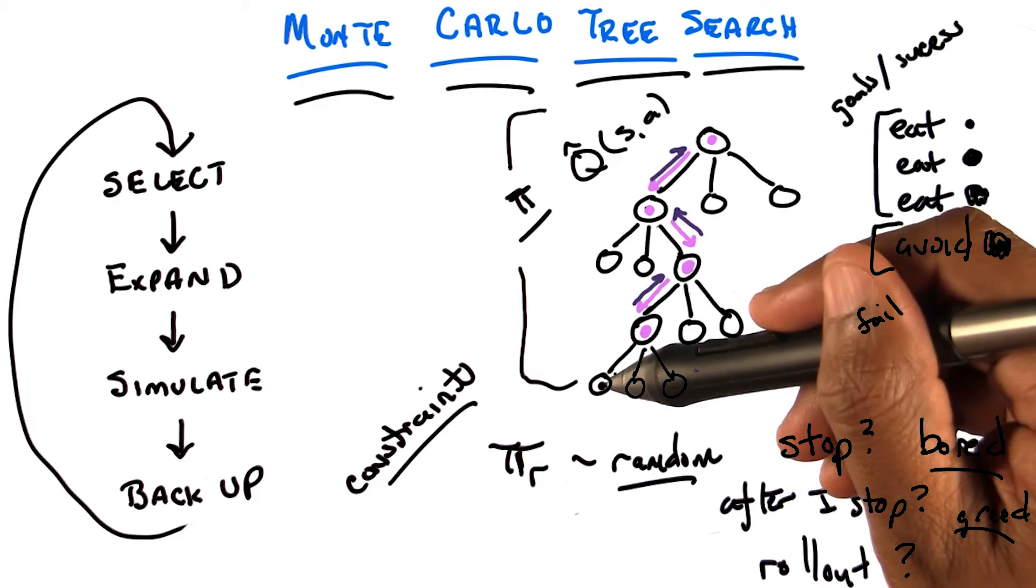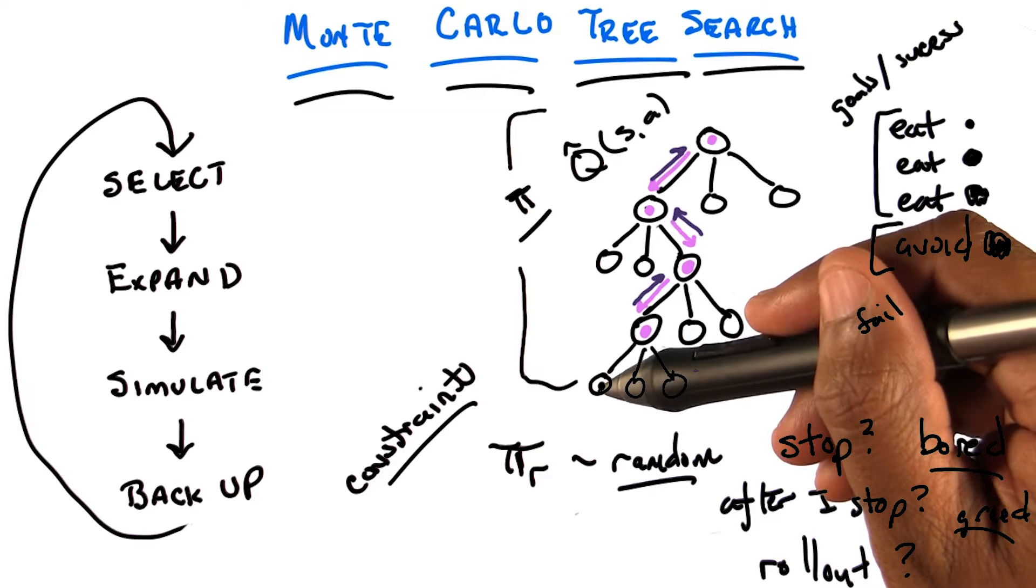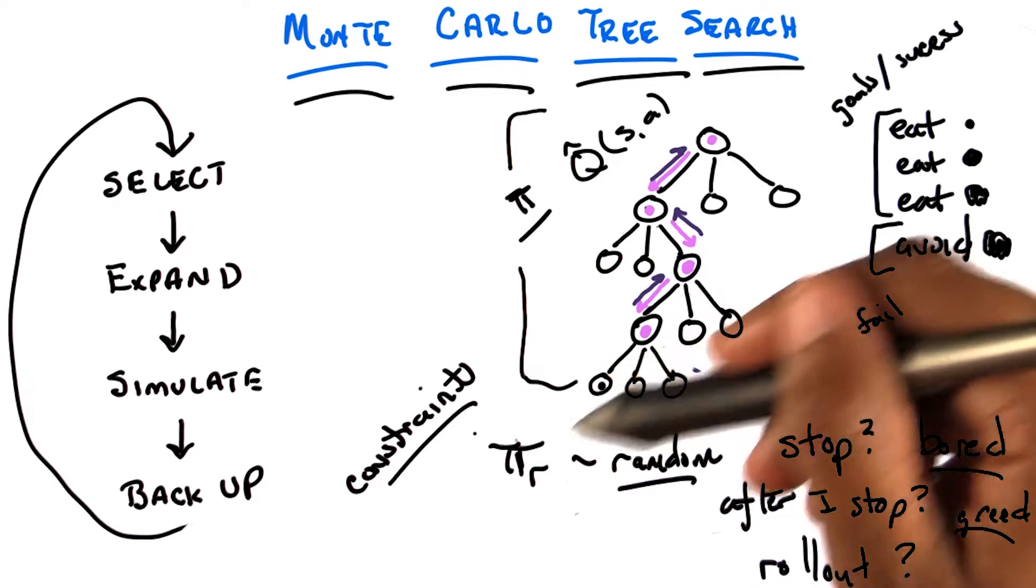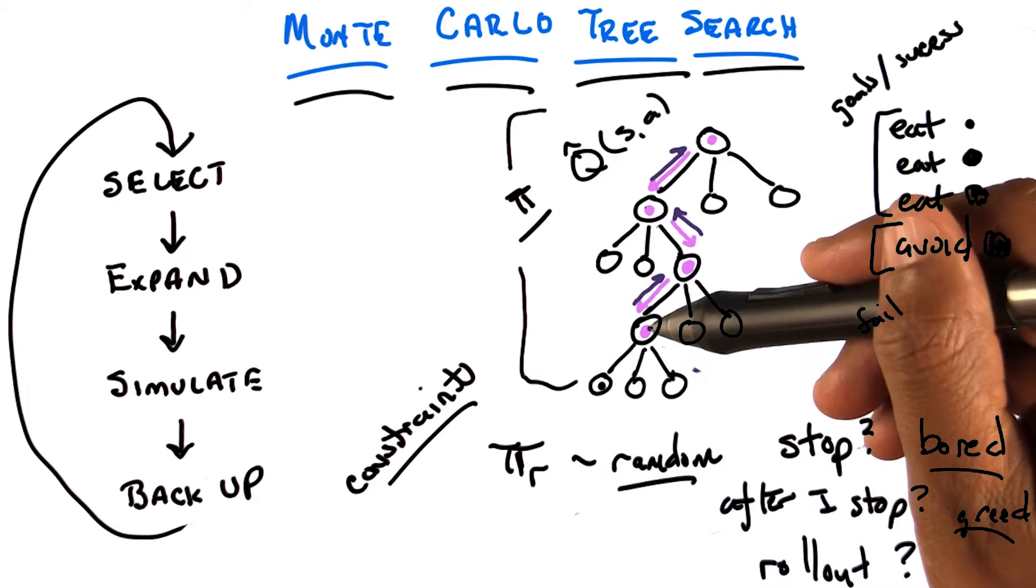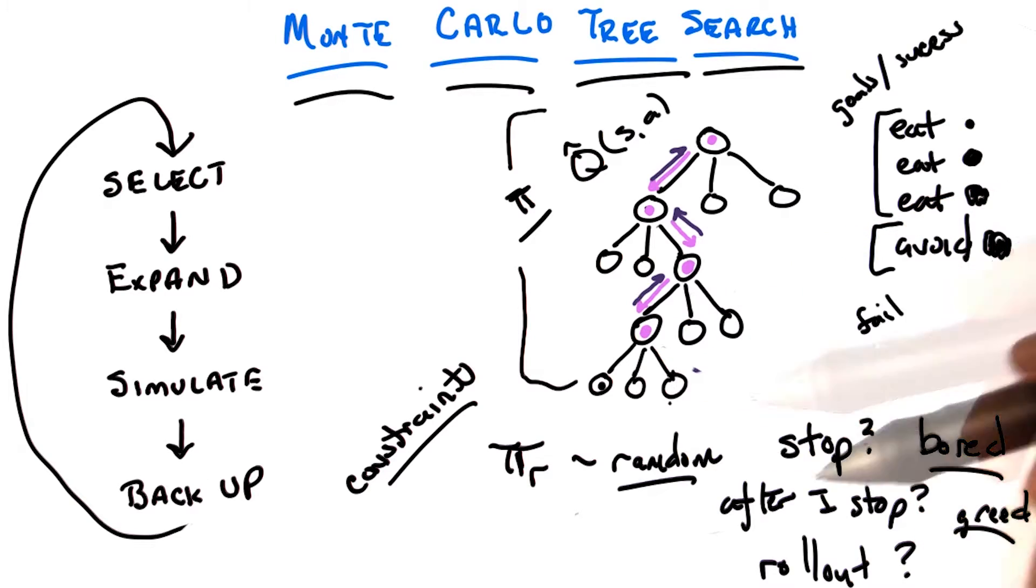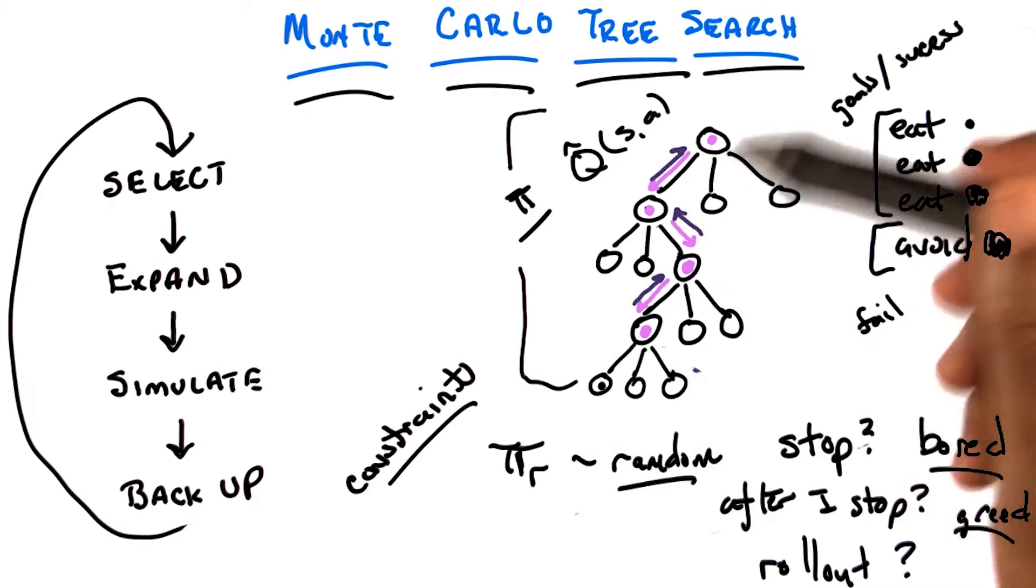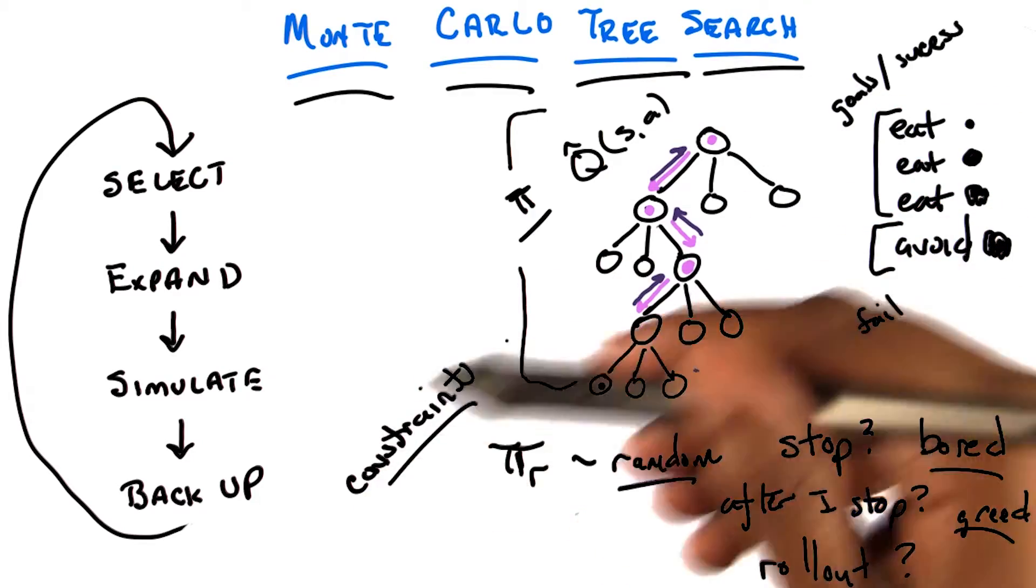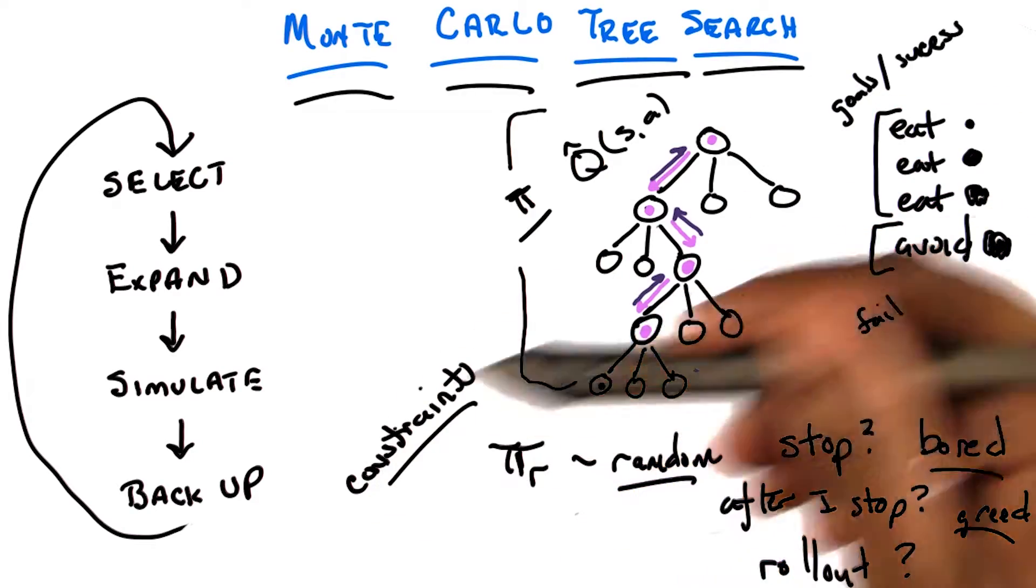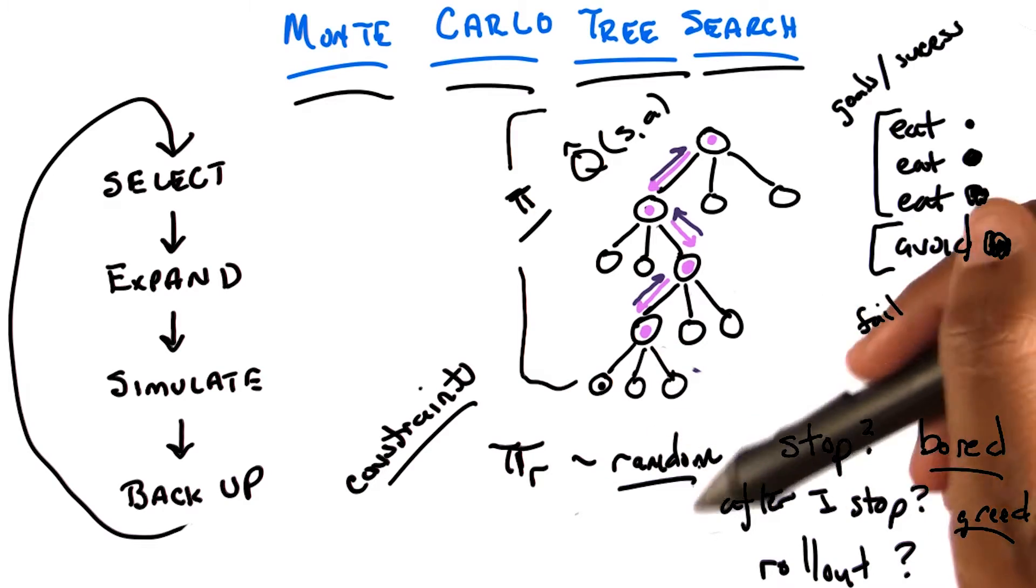This state action pair is better because you can avoid violating your constraints for longer than if you are in this state and take this action. And there are lots of other things that you might do. I just sort of wanted to give you a flavor of it, which is that I can use these sort of options if they are a certain type in order to be smarter about the way I do my rollout policy.